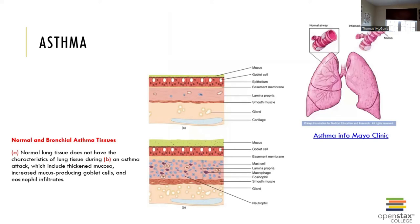Then we have asthma. Asthma is a situation where the respiratory passages are extremely sensitive to irritants, resulting in a constriction of the airways, inflammation, and edema within the mucosa of the passageways. It also causes accelerated mucus production. Asthma can be caused by a variety of things, including allergens, toxins, or even exercise.